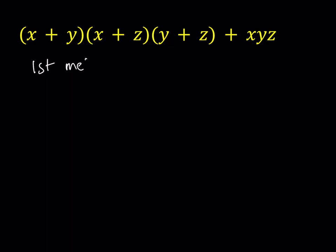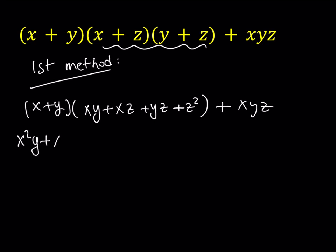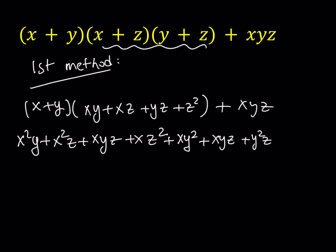We're going to go ahead and distribute these terms. I'd like to keep the first one as is for now and then just multiply these together, giving us (x + y) multiplied by (xy + xz + yz + z²), and then add xyz. Distributing this gives x²y + x²z + xyz, then xz², and distributing the y gives xy² + xyz + y²z, then yz², and at the end we add the single xyz.